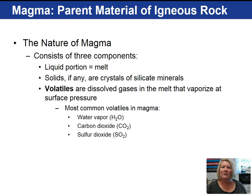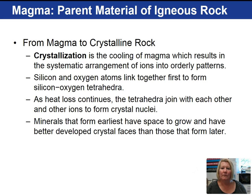The volatiles remain in solution when the magma is under pressure at great depths within the Earth. When the magma comes to the Earth's surface, the lower pressure allows the volatiles to come out of solution, producing a release of gases. The term crystallization is used when magma cools and results in a systematic arrangement of ions.